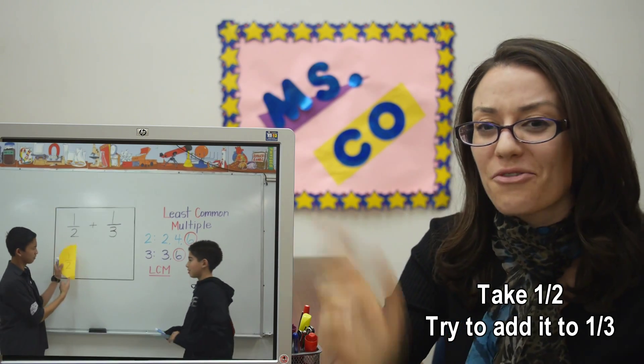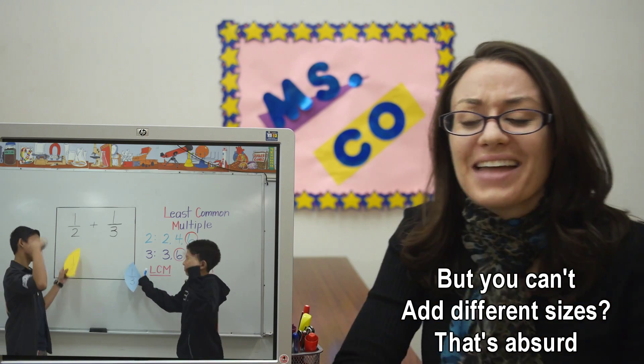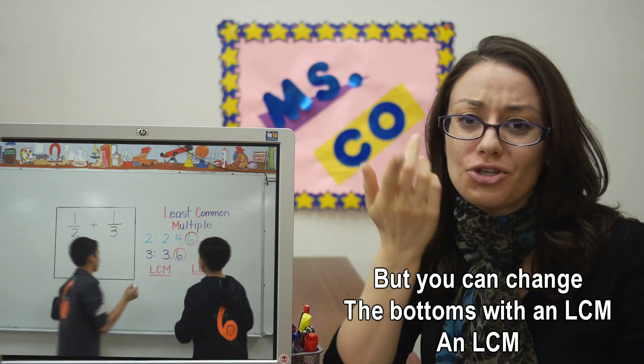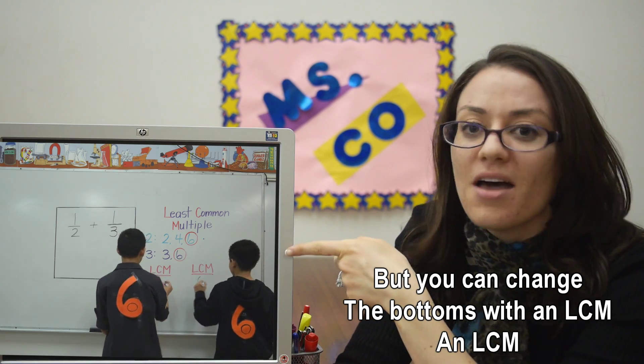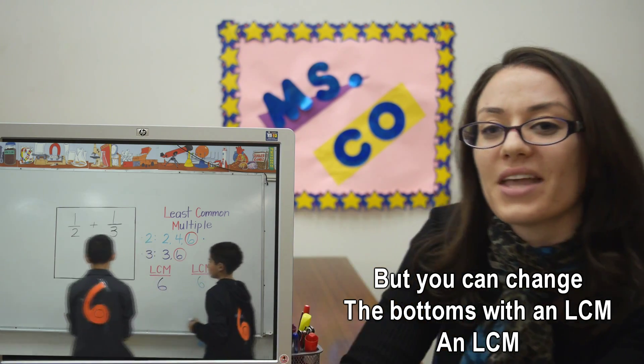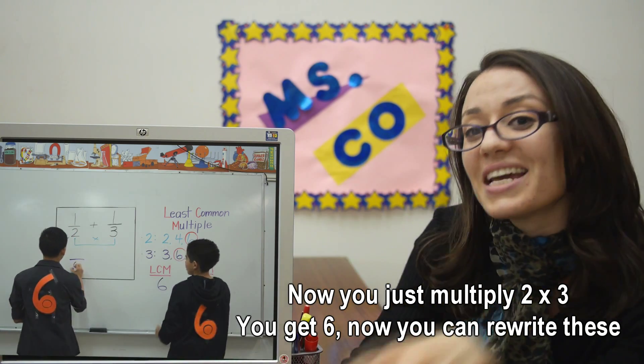Take one half, try to add it to one third. But you can't add different sizes, that's absurd. But you can change the bottoms with an LCM, an LCM. Now you just multiply two times three. You get six, now you can rewrite these.